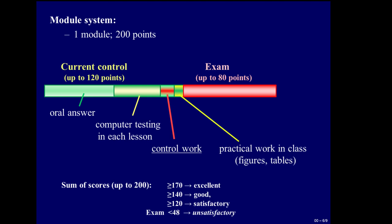Oral answers, computer testing in each lesson. Students solve genetic problems during control work. Also they draw pictures, filling tables. Each type of this work is estimated from 2 to 5. Then these marks are converted into points. Hence during practical classes students can receive 120 points.